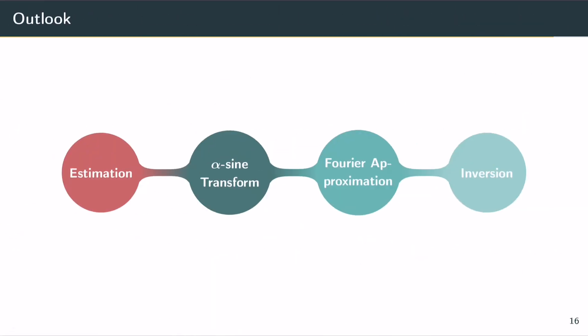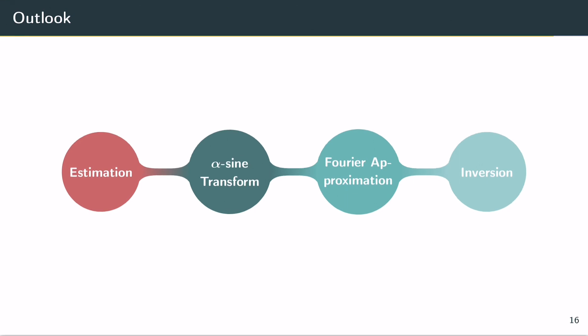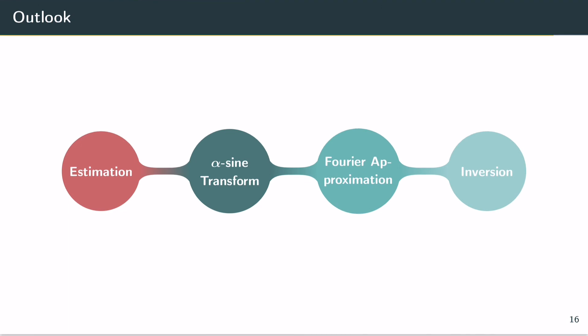Summarizing what we've talked about today: we talked about the alpha sine transform and its relation to real stationary harmonizable symmetric alpha stable processes. I've shown a series representation of the alpha sine transform, and using the series representation we can approximate the Fourier transform. After solving the system of linear equations, you can interpolate and apply Fourier inversion to get our function f.